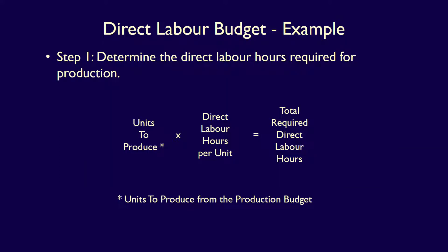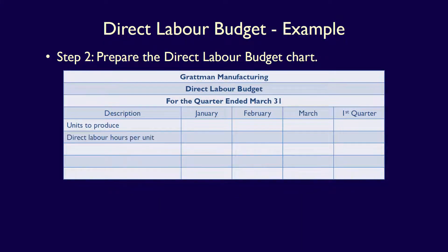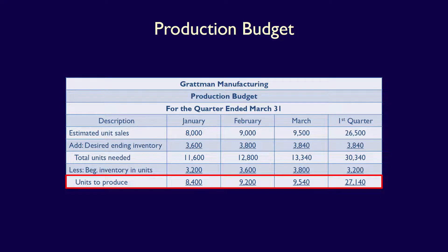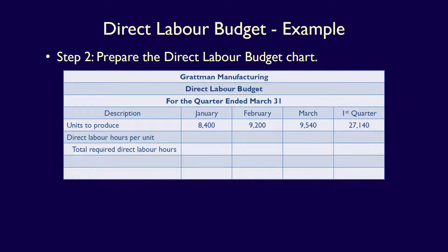We can now use our formula from step one: units to produce multiplied by the direct labour hours per unit, to determine the total required direct labour hours. In the chart, units to produce is the description in the first row, direct labour hours per unit in the second row, and total required direct labour hours in the third row. We fill in the units to produce from the production budget already completed: January 8,400 units, February 9,200 units, March 9,540 units, and the first quarter 27,140 units.